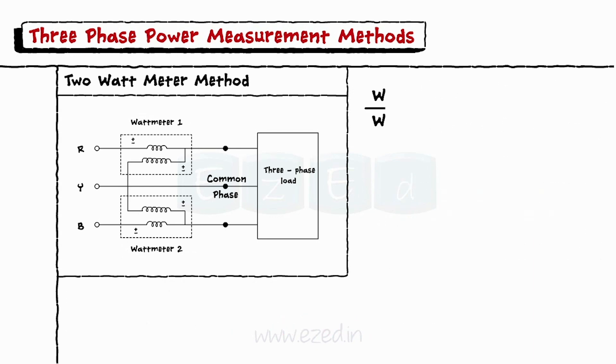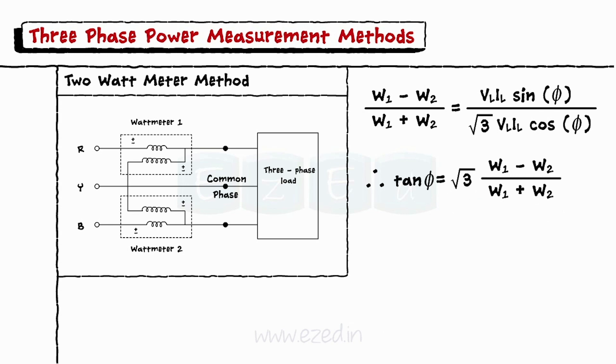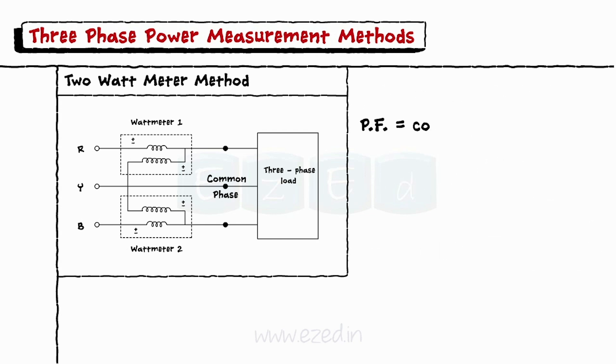Now taking the ratio of W1 minus W2 upon W1 plus W2, we get tan phi equals root 3 into W1 minus W2 upon W1 plus W2. Thus phi equals the tan inverse of this ratio. The power factor is given as cos phi. Thus the power factor becomes cos phi equals cos of tan inverse of root 3 into W1 minus W2 upon W1 plus W2.